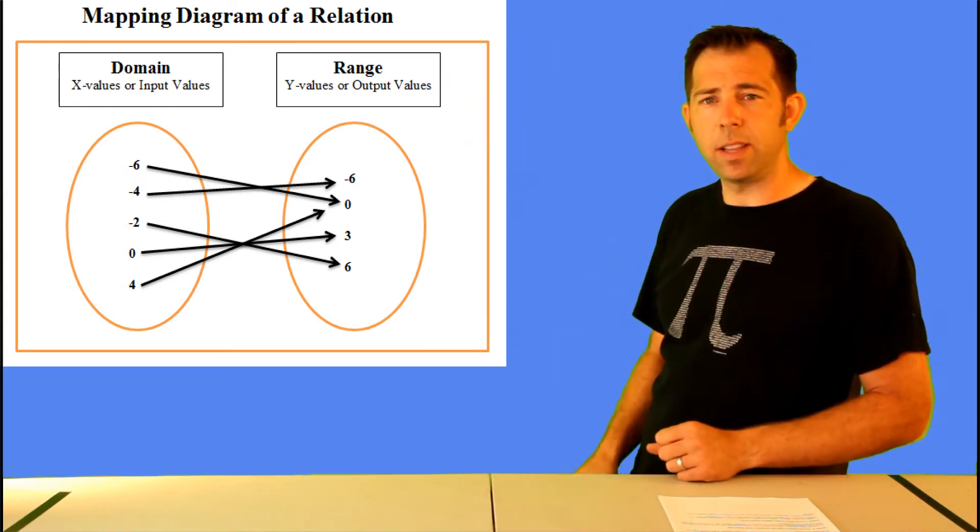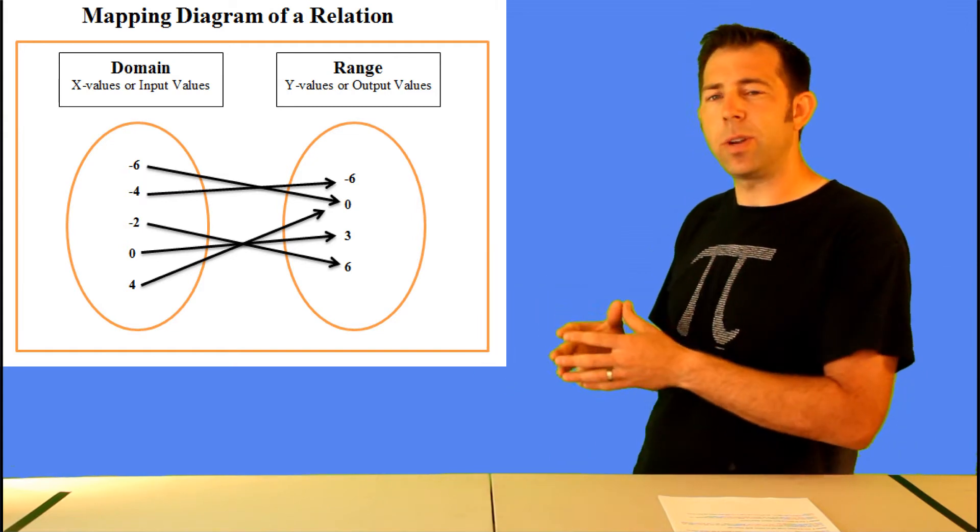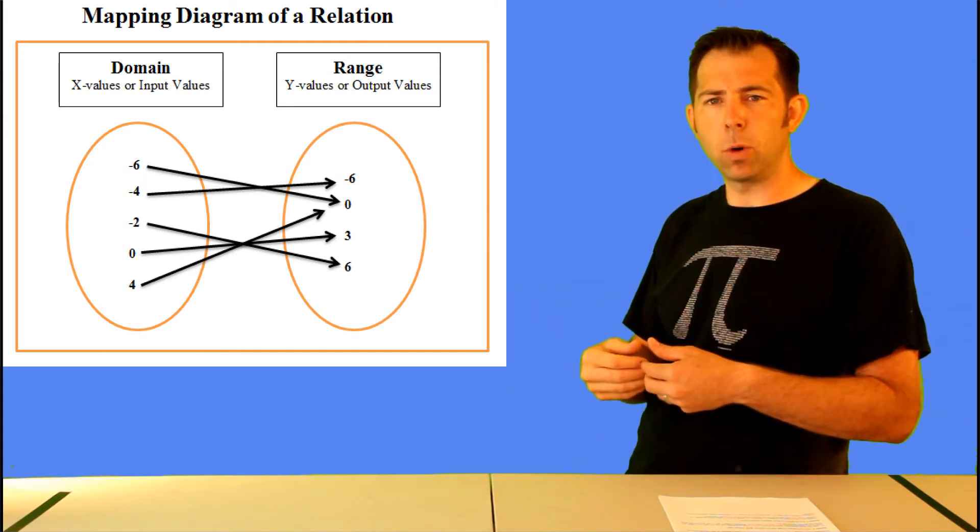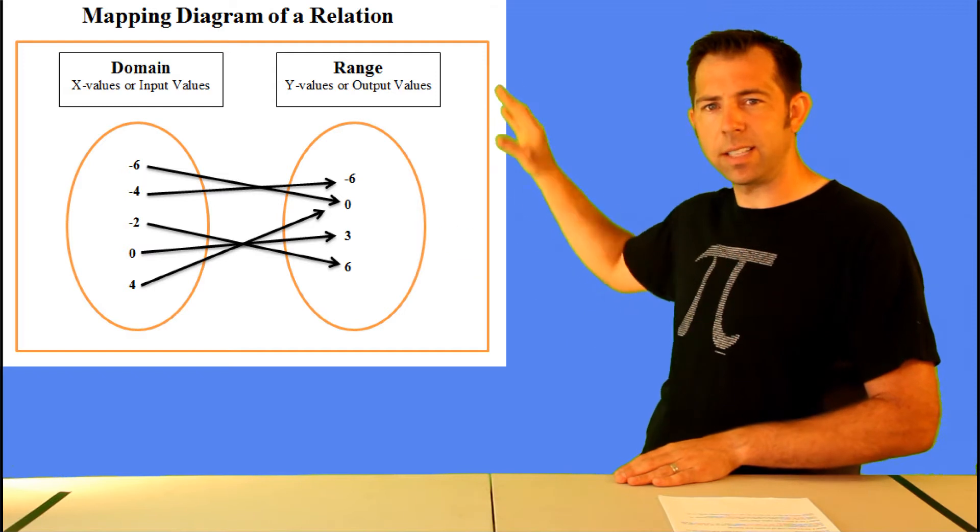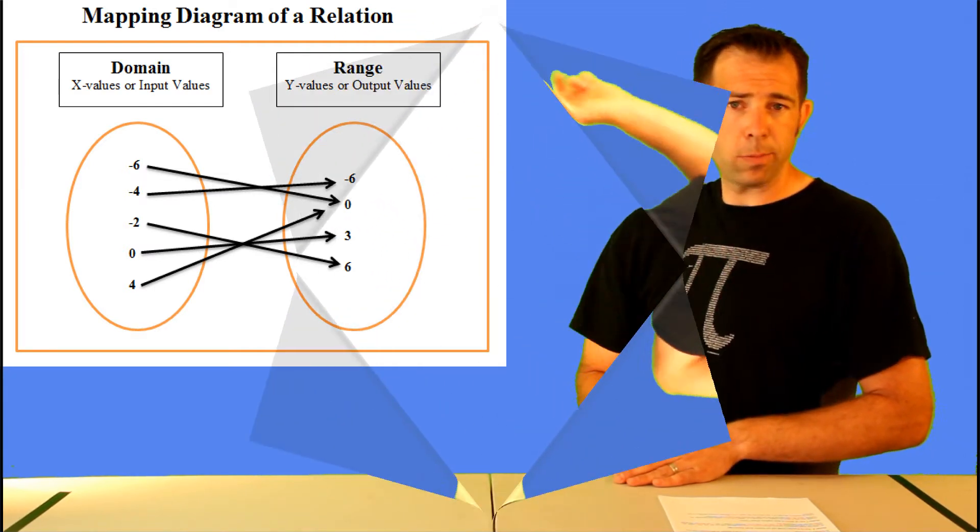Notice that it looks like maybe one value is missing in the range. Well, that's only because we don't put numbers in there multiple times if there's repeats. You only need to list the number and then connect them with an arrow.